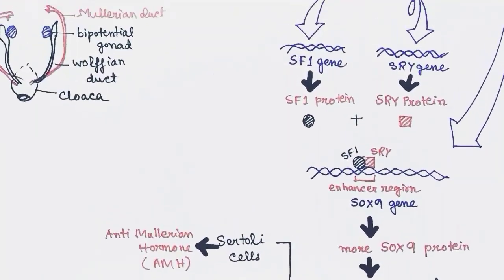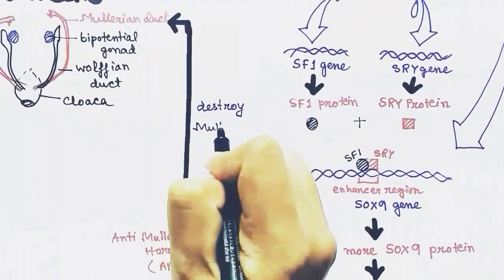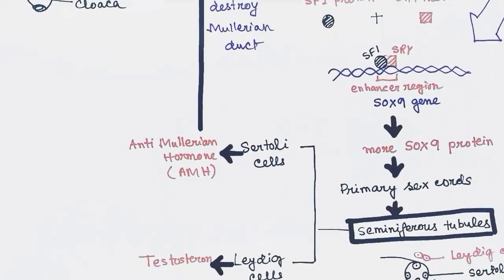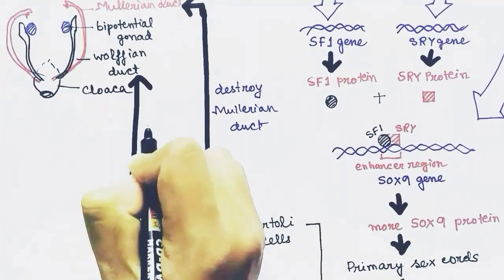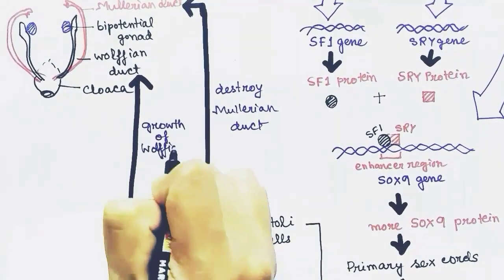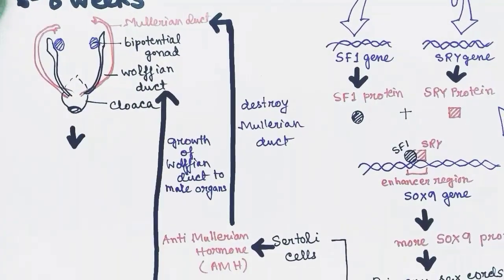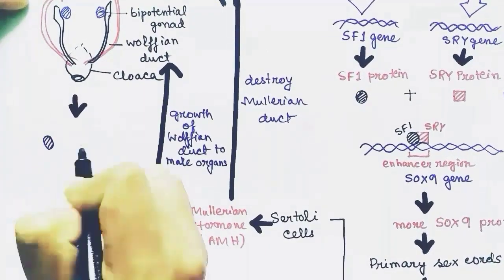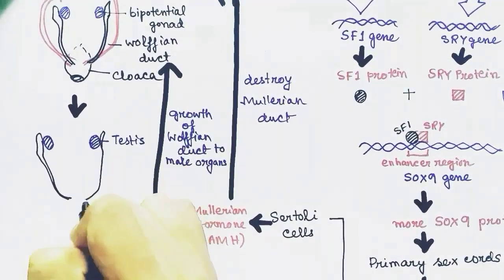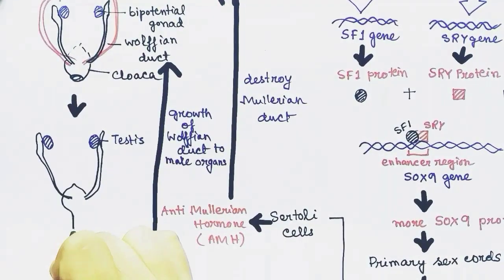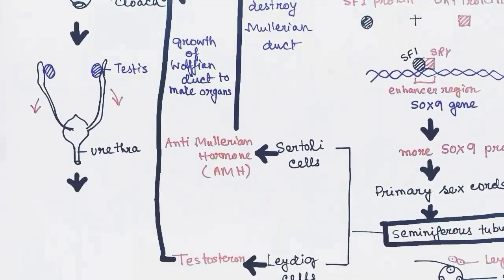Anti-Müllerian hormone in the male individual will destroy the Müllerian duct, which is the precursor of the fallopian tube in females. So AMH destroys the Müllerian duct, and the testosterone released by the Leydig cells acts on the Wolffian duct to develop the male reproductive organs — that is, vas deferens, epididymis, etc. — and also develops the testis from the bi-potential gonads.